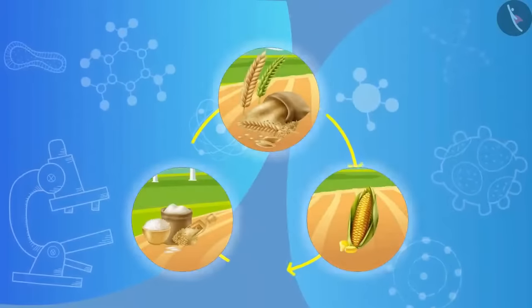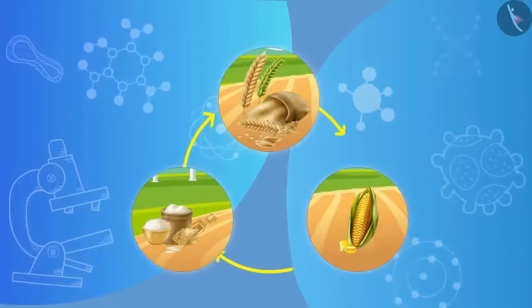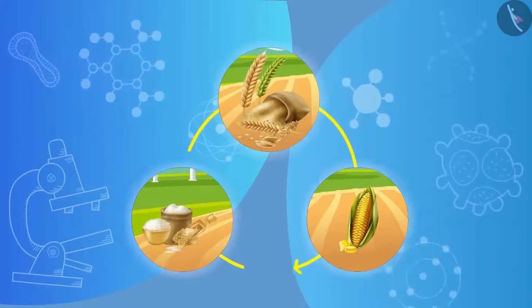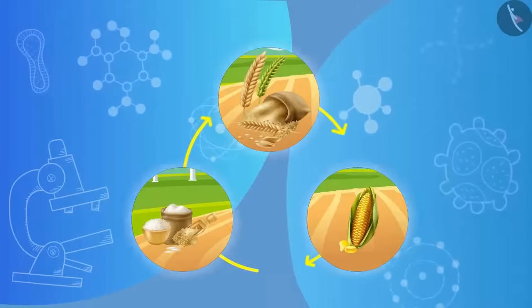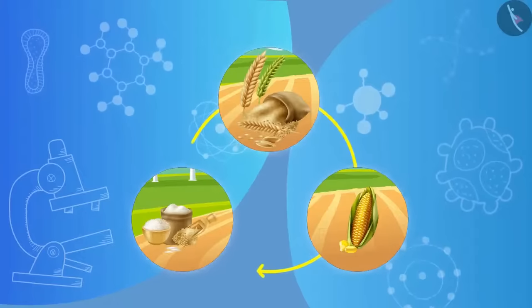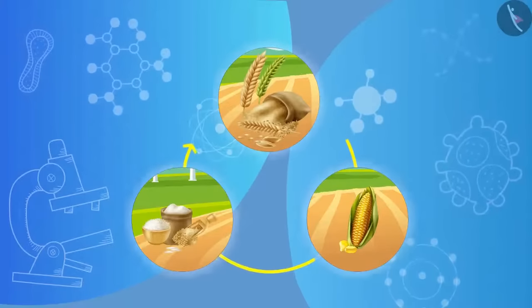Crop rotation. In this method, different types of plants are grown in a cyclic manner on the same land. This is done so that soil is not used for only one set of nutrients and it increases crop production.